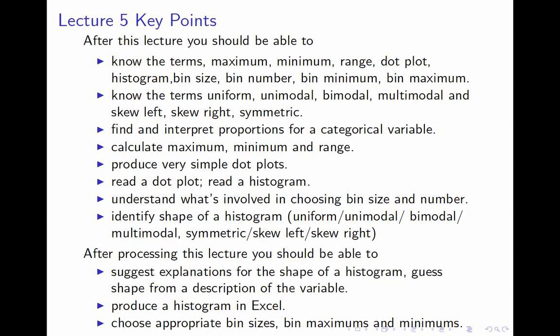You should be able to find and interpret proportions for a categorical variable. That's very easy. Just take how many there are and divide by the total. You should be able to calculate maximum, minimum, and range of a data set. You should be able to produce very simple dot plots. I may ask you to do one with five numbers or something. You should be able to read a dot plot and read a histogram. Be able to say things like, that x there means there's somebody whose quiz score was seven. More generally, you should be able to identify the shape of a histogram. Look at a histogram and say, that is unimodal and symmetric. I did not mention, but I should, that the combination, the nicest and most common combination, which is unimodal and symmetric, so one peak and two similar sized tails, is often called bell-shaped. And if you've heard reference to the bell curve, that's referring to variables which have a bell-shaped distribution.